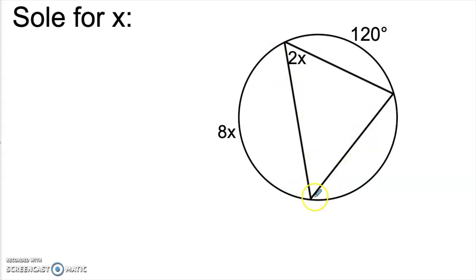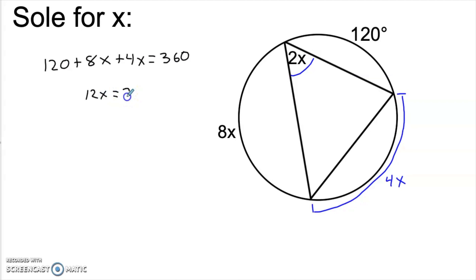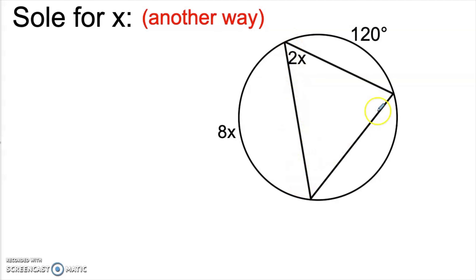This is actually called an inscribed triangle for the same reason that these angles are called inscribed angles. A polygon is said to be inscribed in a circle if all of the vertices of that polygon are on the circle. So here we have an inscribed triangle, and all three angles of this triangle are, in fact, inscribed angles. This one here that we're interested in, labeled 2x, is formed by these two chords, which means that its intercepted arc has to be double, or 4x. Remember, if we go all the way around the circle it'll be 360 degrees, so 120 plus 8x plus 4x has to equal 360, so 12x is 240 and x is 20.